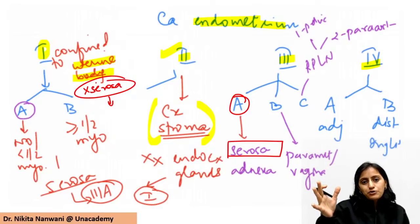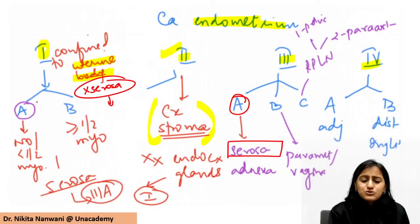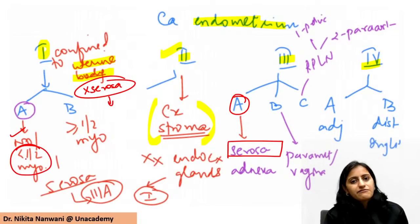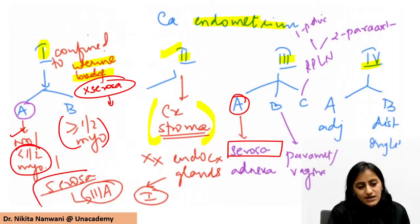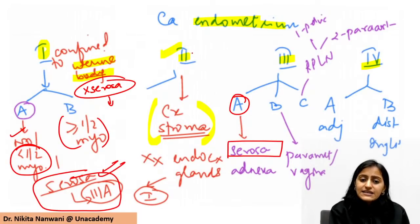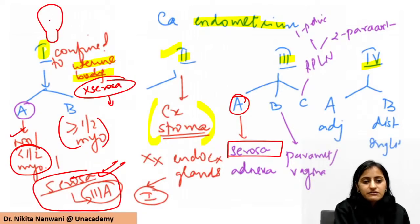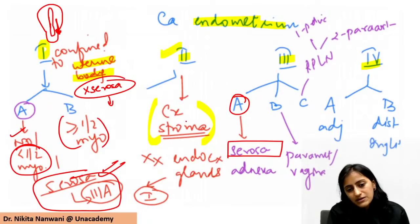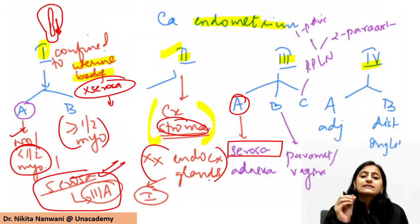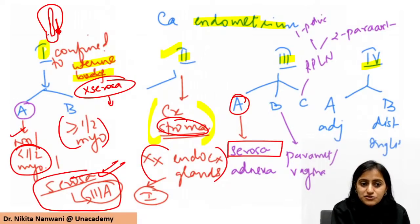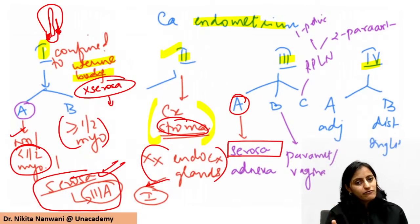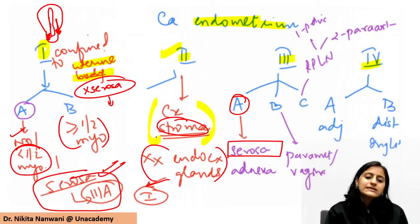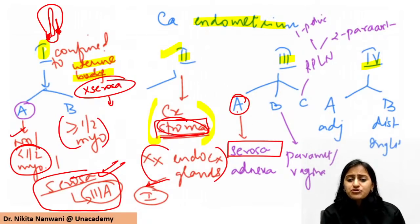Stage 1A of ca endometrium is no myometrium involvement or less than half myometrium involvement. Stage 1B is more than or equal to half myometrial thickness involvement. Serosa is stage 3A. Stage 2 is cervical stroma involvement - not just endocervical glands. If only endocervical glands are involved (cervical stroma not involved), it is still stage 1. To call it stage 2 it has to be cervical stroma involvement.